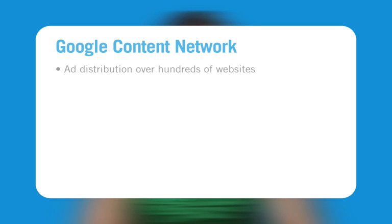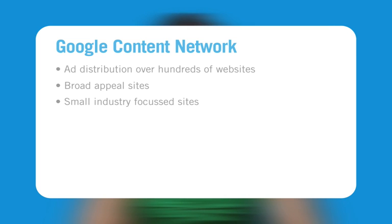AdWords is a highly effective way of advertising because your ads can appear on many different websites, not just google.com.au. This is done through ad distribution, which is defined as AdWords ads appearing on Google's partner websites, also known as the Google content network. Google has partnerships with hundreds of websites including broad appeal sites like smh.com.au and theage.com.au, and small industry focused sites like totaltravel.com.au. All AdWords ads have the ability to appear on these websites plus many more like them. You, the advertiser, choose if you want your ads shown on Google's content network or not. You don't have to do any extra work to make this happen — Google takes the ads that you create and shows them on our partner sites.